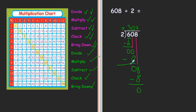But I'm not completely finished because I need to check. I need to multiply to check to see if my answer is correct. 304 times 2.